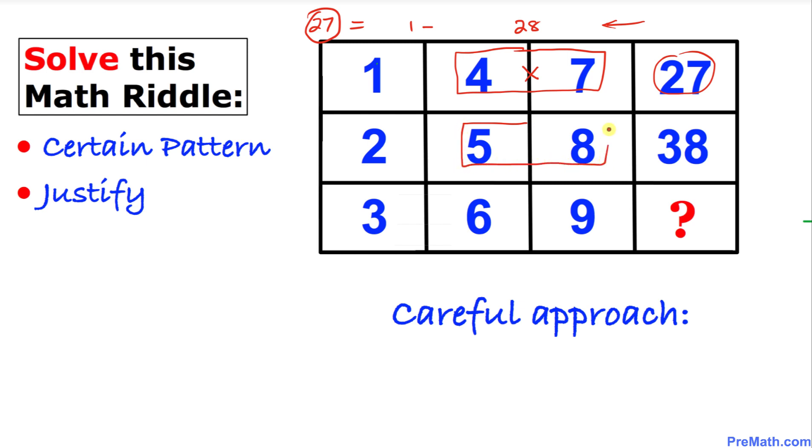If we multiply them we are going to get 40. 5 times 8 is 40. And if we subtract 2 from here we are going to get 38, and that's what we got.